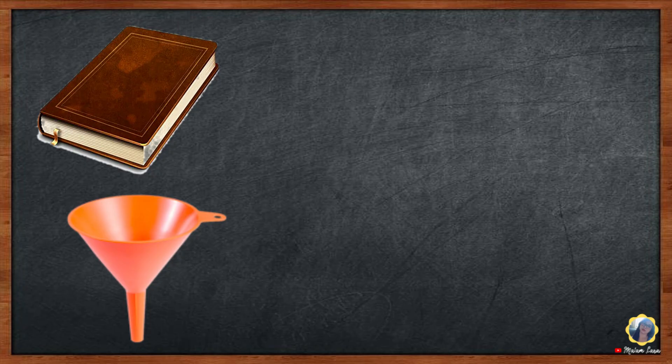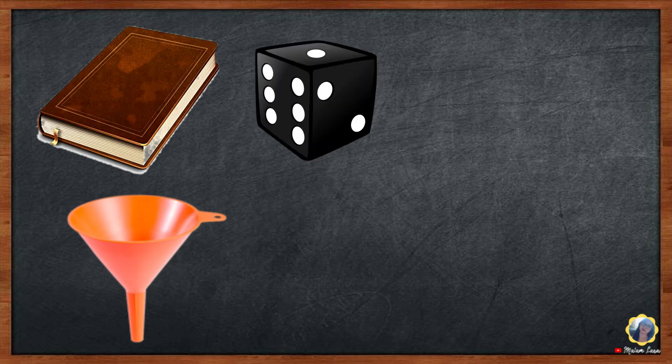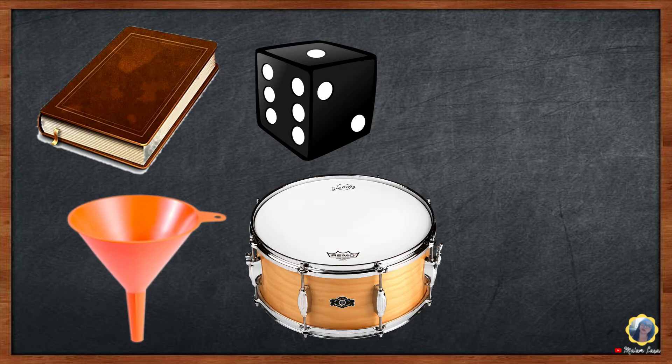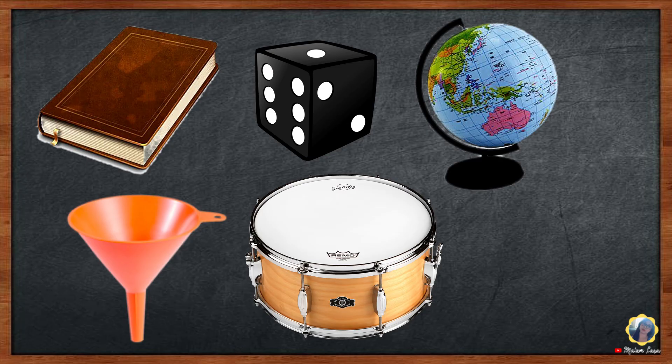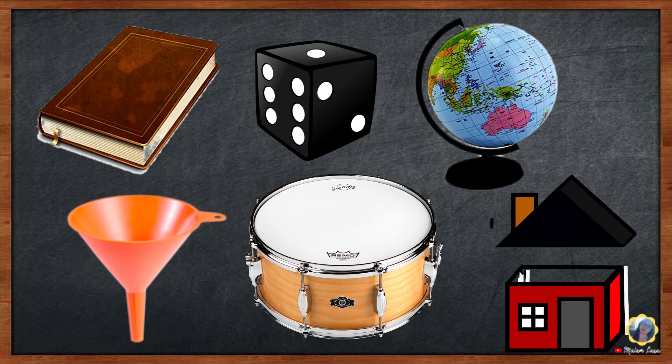Let's practice. Name the solid figure that each object represents. Book: rectangular prism. Funnel: cone. Die: cube. Drum: cylinder. Globe: sphere. Roof of a house: triangular prism. Excellent!